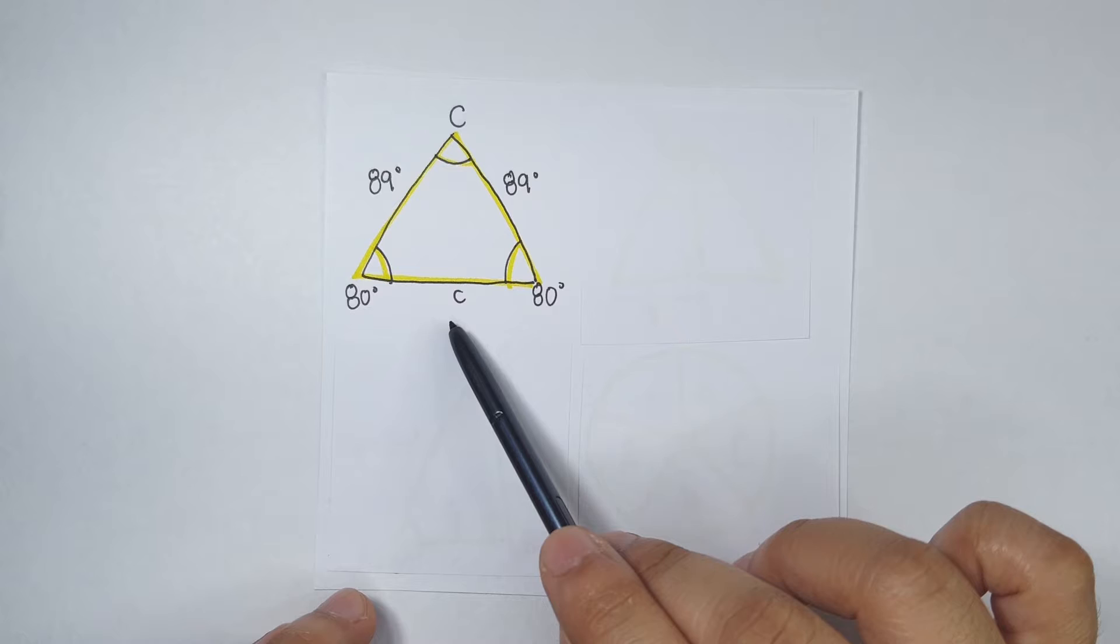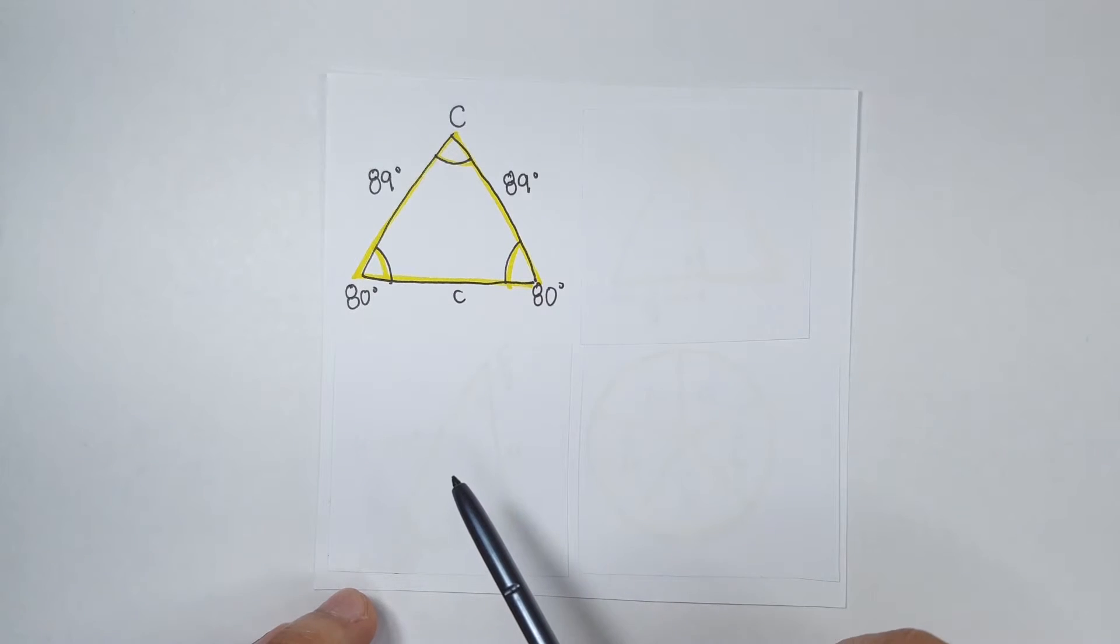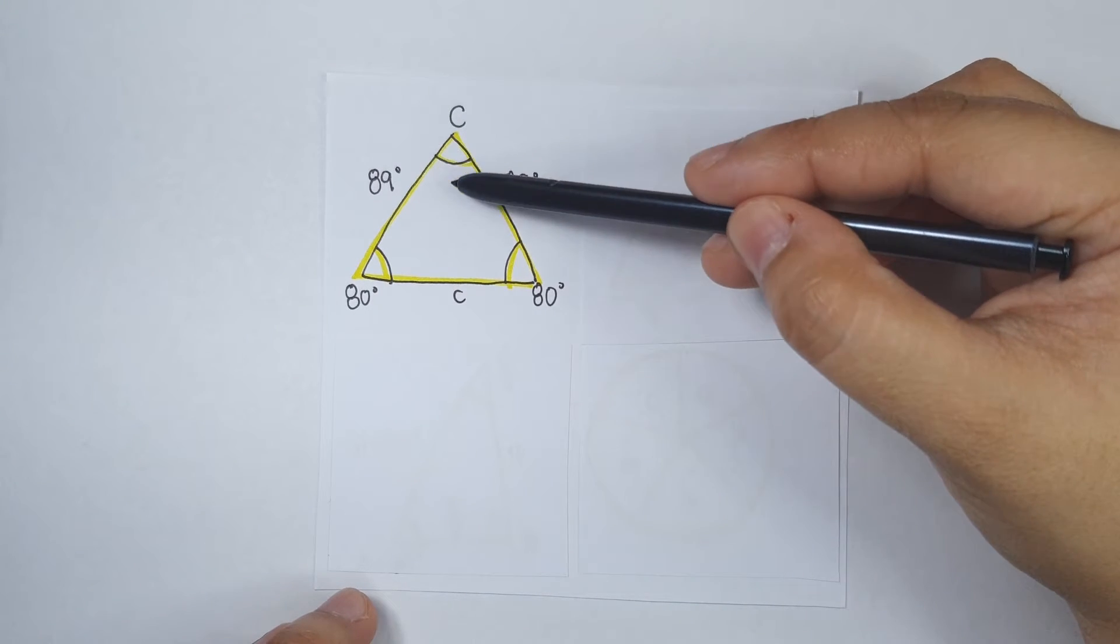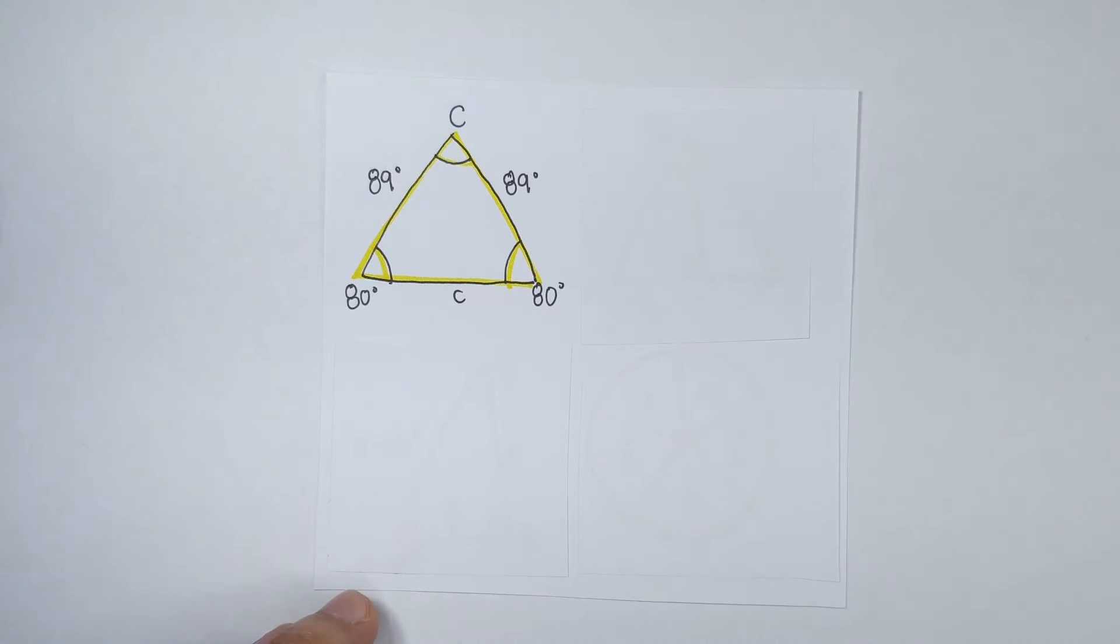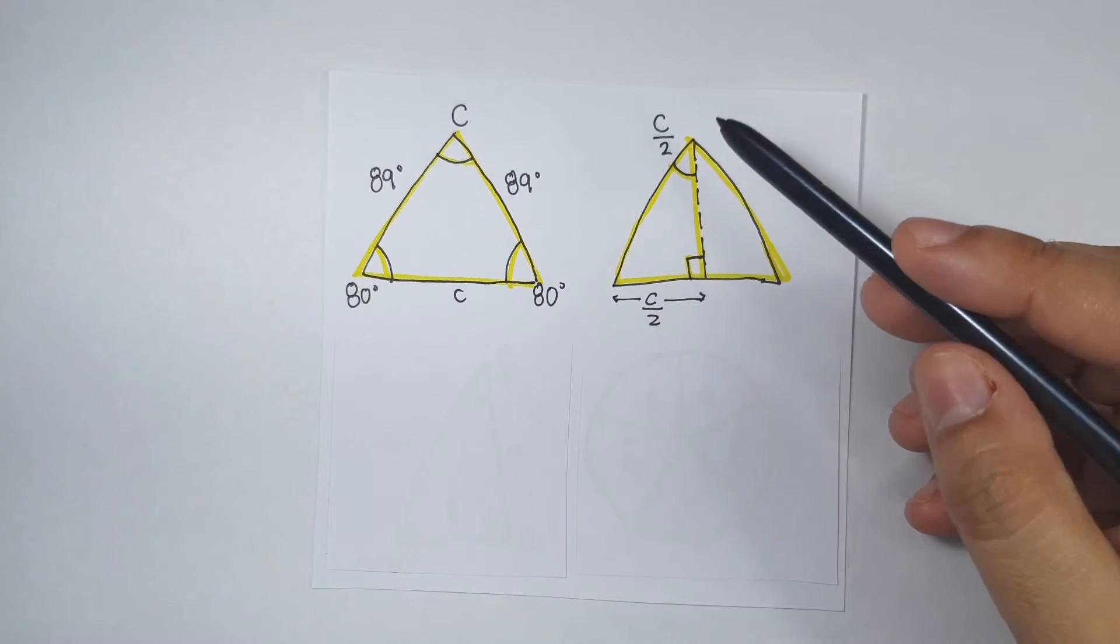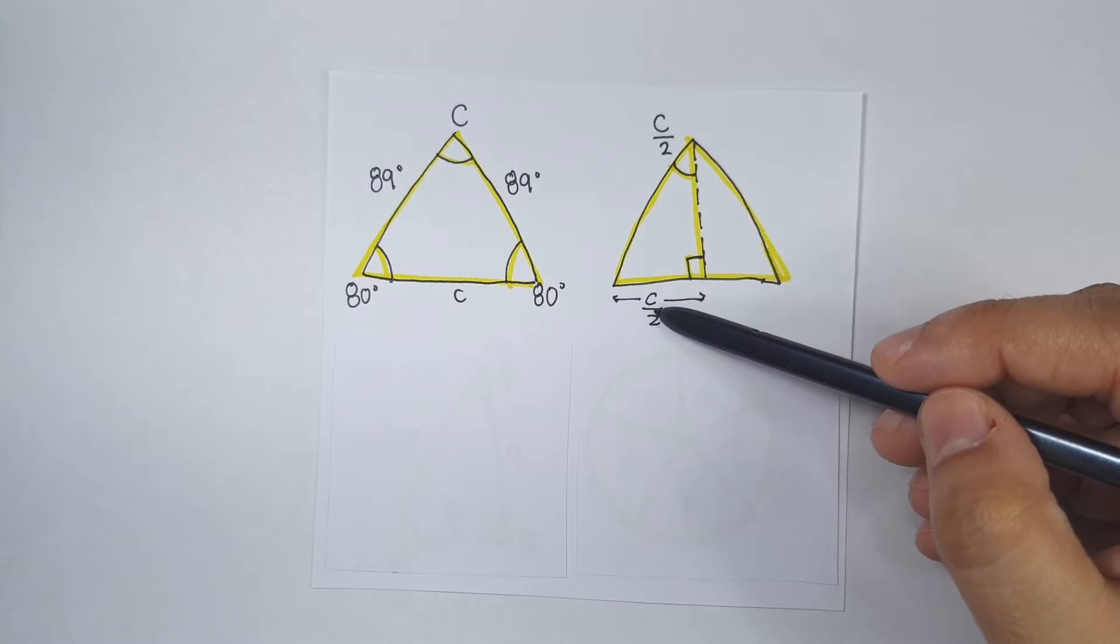So, what we're looking for is this side here, side C. What we'll do is that we will divide this triangle into two triangles. So, this angle here is 90 degrees and this is C over 2 and C over 2.